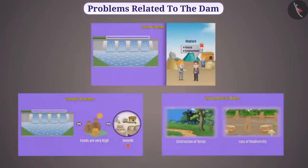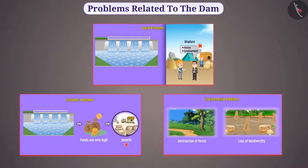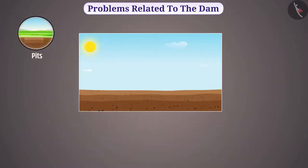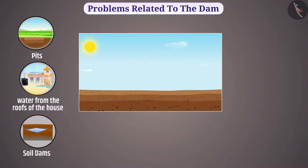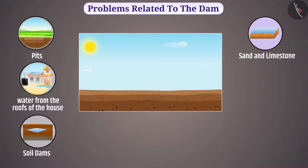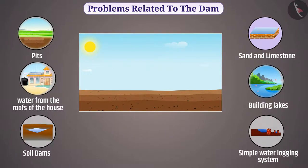As an alternative to these problems, there are several other methods. We use various methods such as digging small pits, collecting water from the roofs of houses, making small soil dams, making water collectors made of sand and limestone, building lakes, and setting up a simple water-logging system to increase the ground water level.